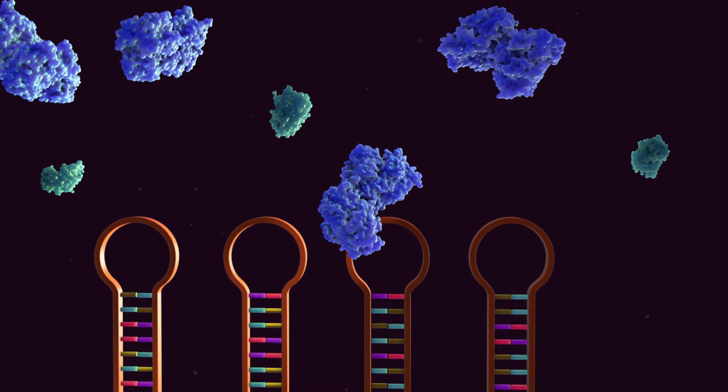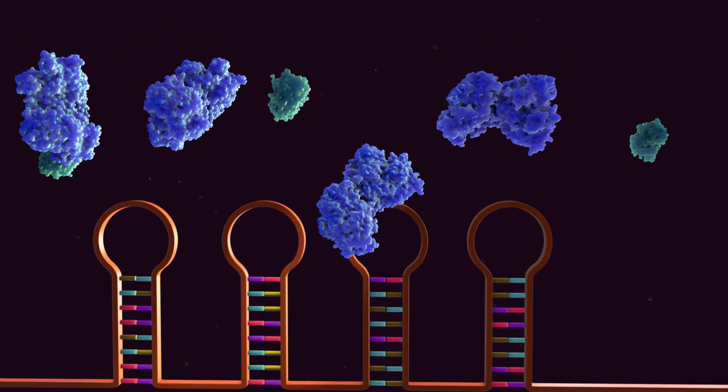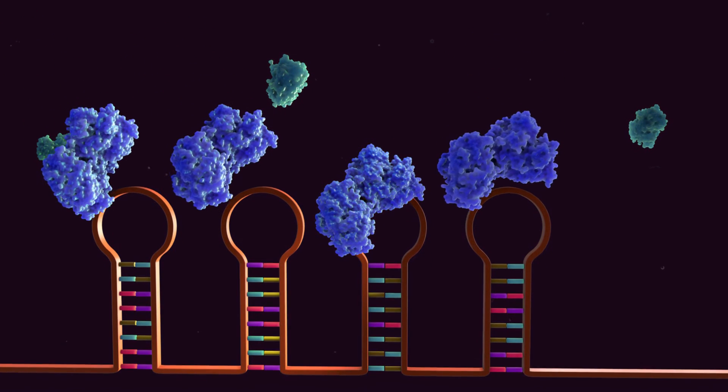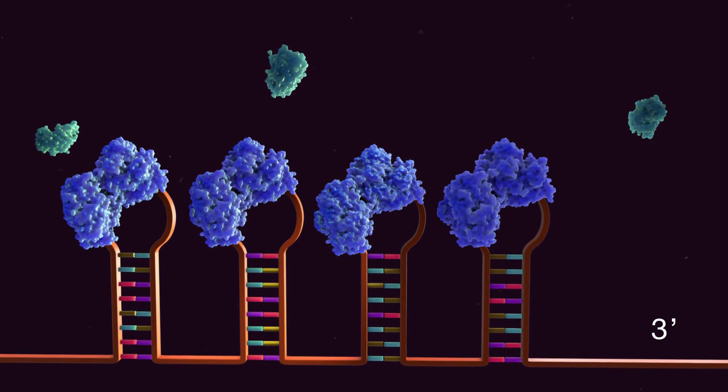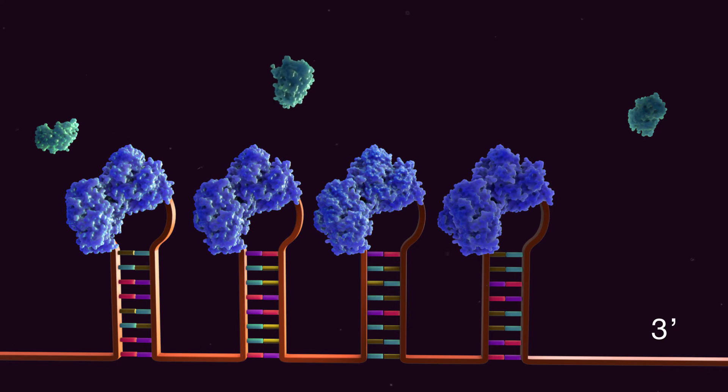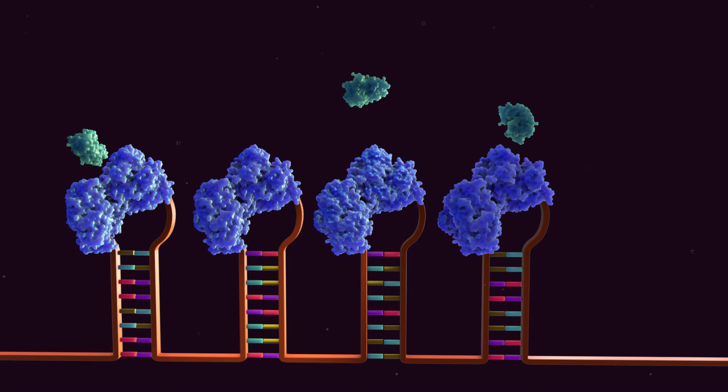The IRP1 proteins are now able to bind to the multiple iron-responsive elements in the three-prime untranslated region of the transferrin receptor messenger RNA. Binding causes the transferrin receptor messenger RNA to become stable and resistant to degradation. Therefore, during iron deficiency, translation of the transferrin receptor occurs and iron uptake into the cell increases as a result.